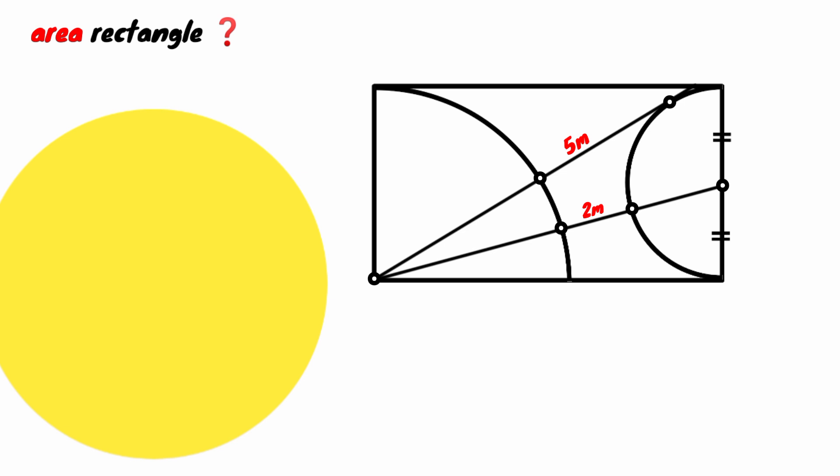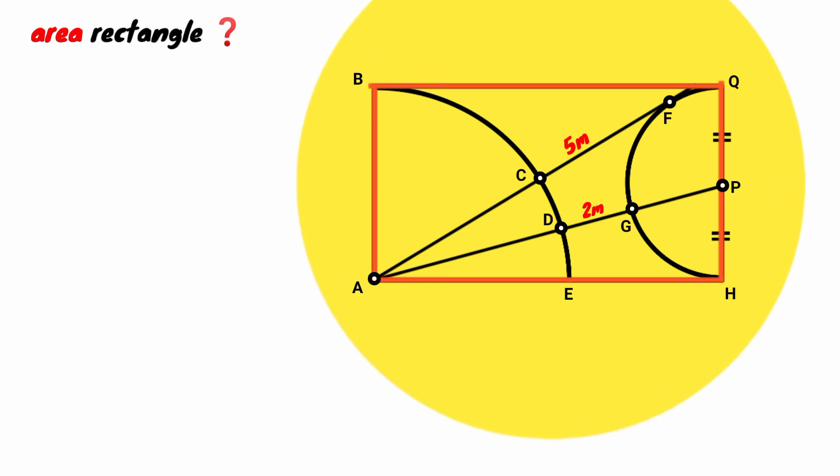We first label the necessary points. Calculating the area of a rectangle is actually very simple. The formula is base times height, so if we take this side as the base B, this will be the height H.